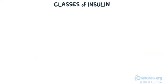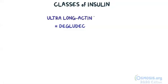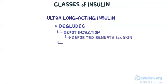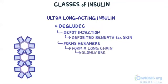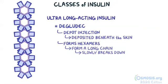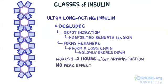A relatively new preparation is insulin degludec, an ultra-long-acting insulin formed by the deletion of a single amino acid from regular insulin. Degludec is a depot injection, meaning the medication is deposited beneath the skin. It forms hexamers like regular insulin, but multiple hexamers combine to form a long chain, which slowly breaks down into monomers. Its onset of action is between 1-2 hours with no peak effect, and its duration of action lasts up to 48 hours.